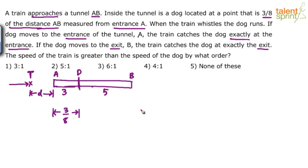For example, if the total distance of the tunnel is 8 kilometers, the dog is at 3 kilometers from the entrance and 5 kilometers from the exit — that's 3/8. Total is 8: 3 plus 5 equals 8 parts. Let's take it as 3x and 5x for the sake of generality, since we don't know the exact values. So let's take 3 parts as 3x and 5 parts as 5x.